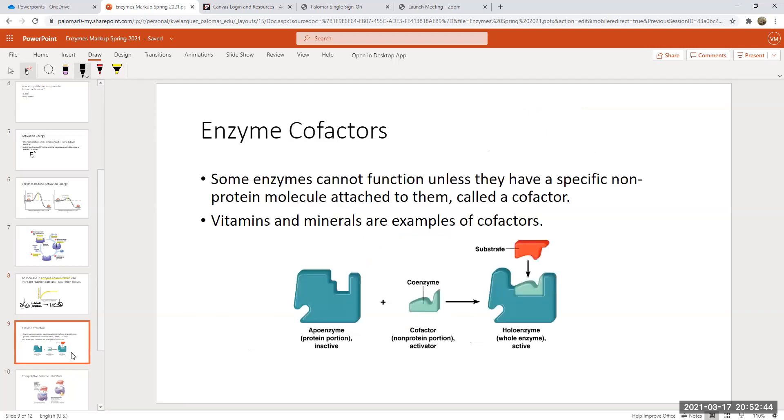Some enzymes actually require cofactors in order to work, and this is a really cool example. For this substrate to fit into the active site of the enzyme, it needs this coenzyme to attach. So this coenzyme is also a cofactor in that it needs to fit in here in order for the substrate to be able to bind. A lot of the vitamins and minerals that are in your diet are actually cofactors for enzymatic reactions. We have a lot of key reactions that can't take place if that cofactor isn't bound to the enzyme.